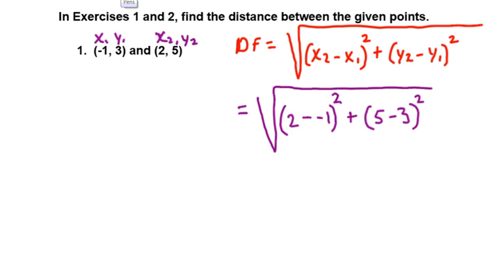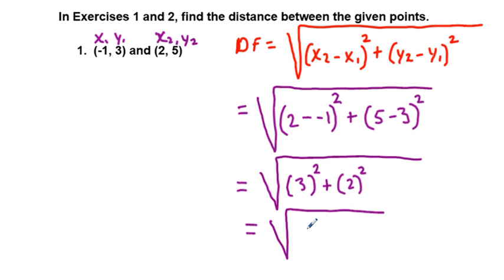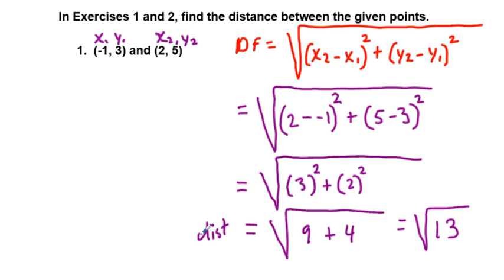It's really important to have our integer arithmetic skills up, or we could get messed up. Simplifying: 2 minus negative 1 equals 3, so that's 3 squared, plus 5 minus 3 equals 2, squared. That gives us 9 plus 4, which equals the square root of 13. So square root of 13 is our distance between the two points.